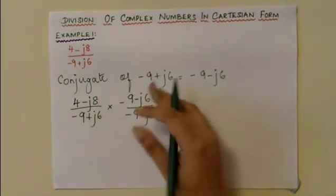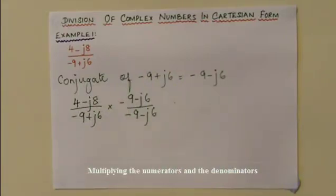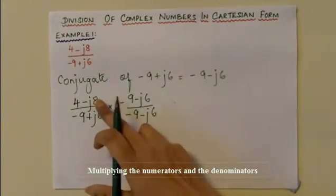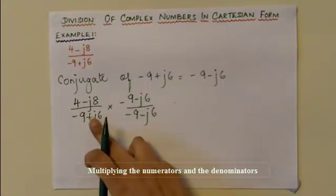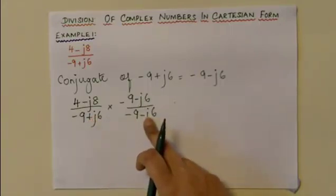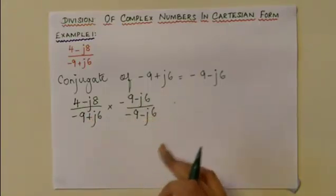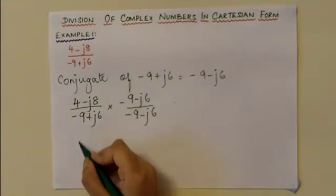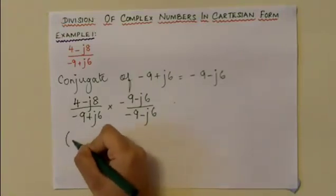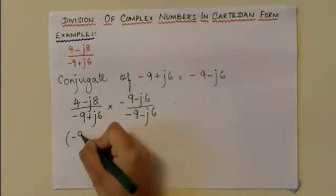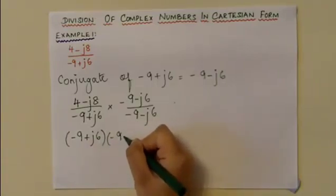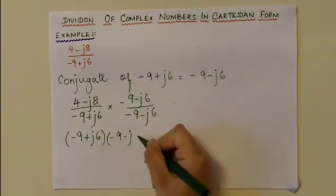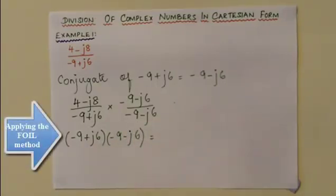According to the normal rule of fractions, multiply the numerators together and multiply the denominators together. Let's start with the denominator: (-9 + j6) times (-9 - j6), applying the normal FOIL method.